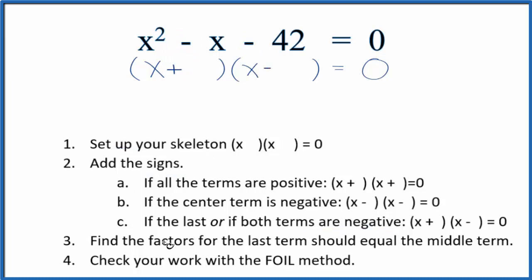Now that we have the signs, we'll find the factors for the last term, negative 42, and those factors should add up to the middle term, -1x.